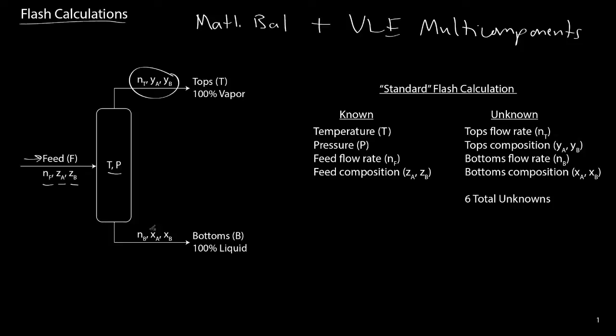The unknowns also include the flow rate and composition of the bottom stream. The material balance component determines the total top and bottom flow rates, while the thermodynamic component determines the compositions. We use Raoult's law to determine the composition of the top and bottom streams, and material balances to find the top and bottom flow rates. To recap: for the standard flash calculation we are provided temperature, pressure, and feed conditions.